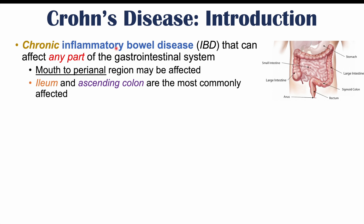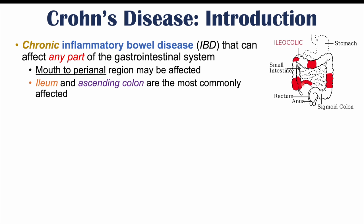In Crohn's disease, the ileum and ascending colon are the most commonly affected locations. The ileum is the last part of the small intestine that connects to the large intestine, and the ascending colon is the first part of the large intestine. This area is the most commonly affected area of the gastrointestinal system in Crohn's disease.